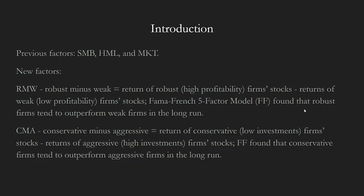RMW represents the difference between the average return of robust firms — those with high operating profitability — and that of weak firms, those with low profitability. CMA represents the difference between the return of firms that invest conservatively and that of firms that invest aggressively. Similar to SMB and HML, RMW and CMA are expected to be positive because robust and conservative firms were found to outperform their counterparts in the long run.